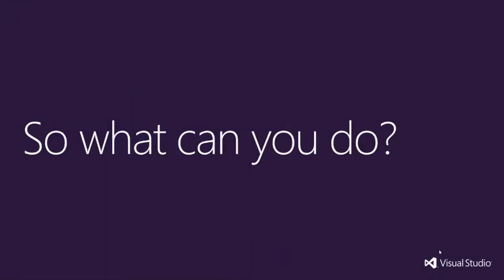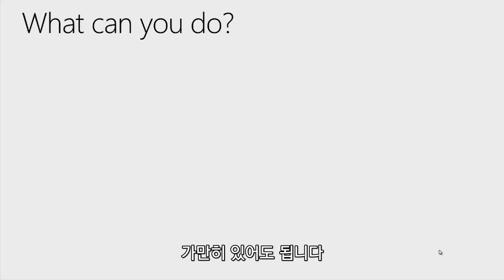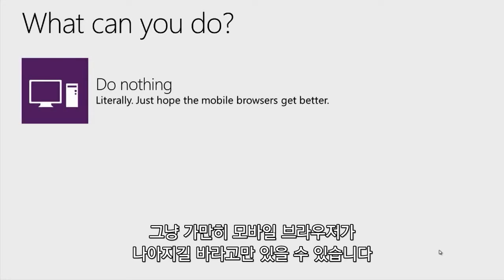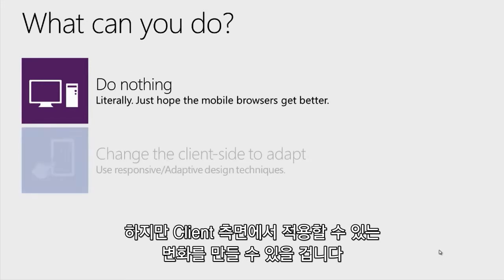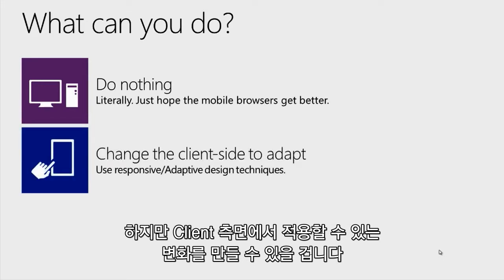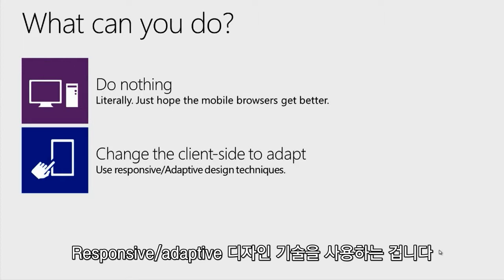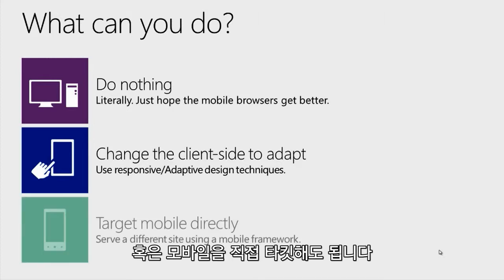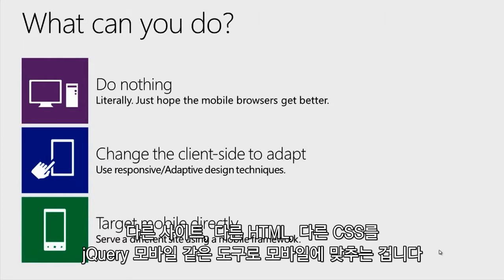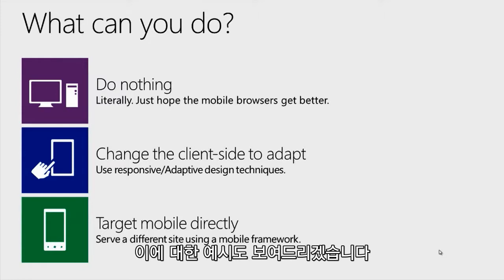What should you do? Well, you could do nothing — literally do nothing and hope that the mobile browsers get better. That might eventually work. But a more appropriate thing to do might be to change the client side to adapt, using responsive and adaptive design techniques, CSS3 and media queries. More extreme, you could target mobile directly, serving a different site with different HTML and CSS specific to a mobile device, using a tool like jQuery Mobile. I'll show you examples of both.